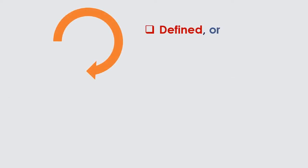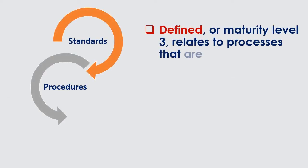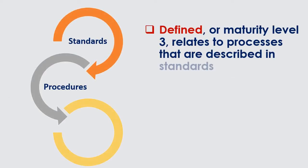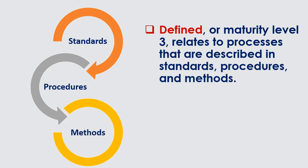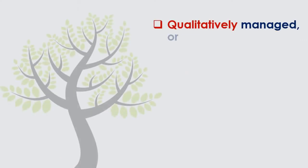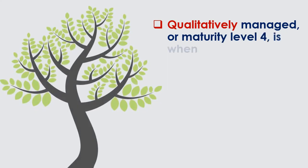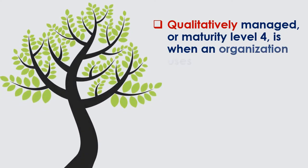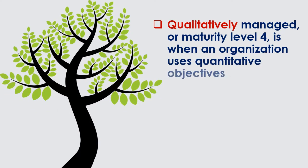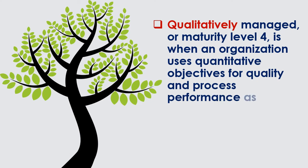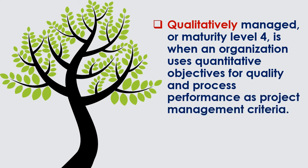Defined, or Maturity Level 3, relates to processes that are described in standards, procedures, and methods. Qualitatively Managed, or Maturity Level 4, is when an organization uses quantitative objectives for quality and process performance as project management criteria.